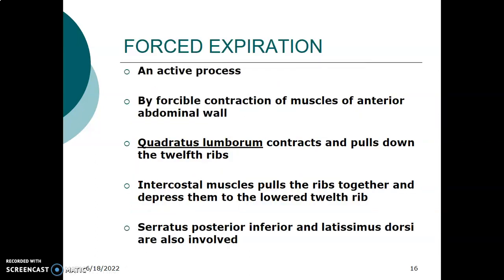Forced expiration is an active process caused by forcibly contracting the muscles of the anterior abdominal wall. The quadratus lumborum, a muscle of the posterior abdominal wall, also contracts and pulls down the 12th rib. Furthermore, the intercostal muscles pull the ribs together and depress them. Serratus posterior inferior and latissimus dorsi are also involved in forced expiration.